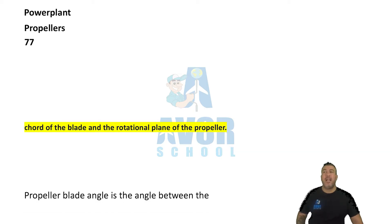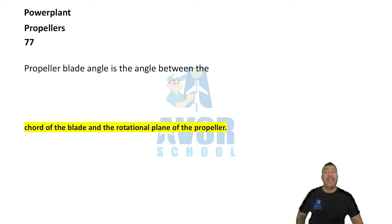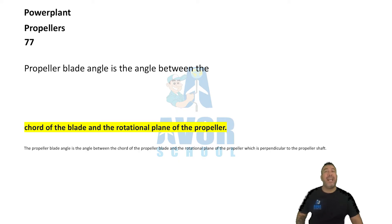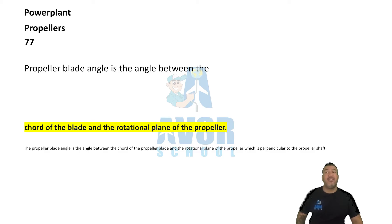Number 77: Propeller blade angle is the angle between the cord of the blade and the rotational plane of the propeller.